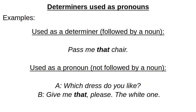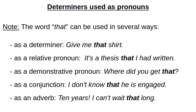Another example: 'pass me that chair. Which chair? That chair.' — so it is a demonstrative determiner. As a pronoun: 'which dress do you like? Give me that, please.' Note that the word 'that' can be used in several ways: as a determiner ('give me that shirt'), as a demonstrative pronoun ('where did you get that?'), or as a relative pronoun forming the subject, object, or complement of a relative clause ('it's a thesis that I had written').